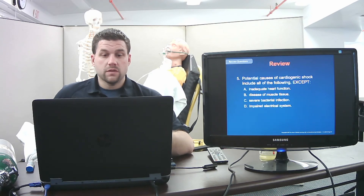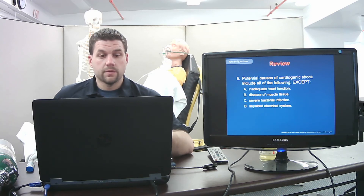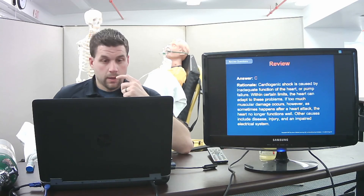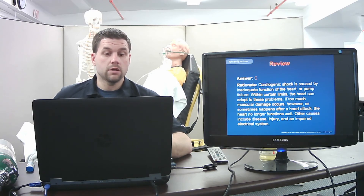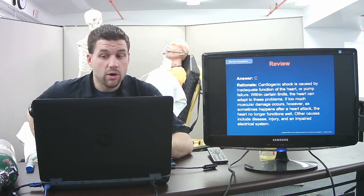Potential causes of cardiogenic shock include all of the following except — answer: severe bacterial infection. Cardiogenic shock is caused by inadequate heart pump function. The heart can adapt to some stress, but if too much muscular damage occurs — as after a heart attack — it fails. Other causes include disease, injury, and impaired electrical system. Patients with prior heart attacks are at higher risk for cardiogenic shock.